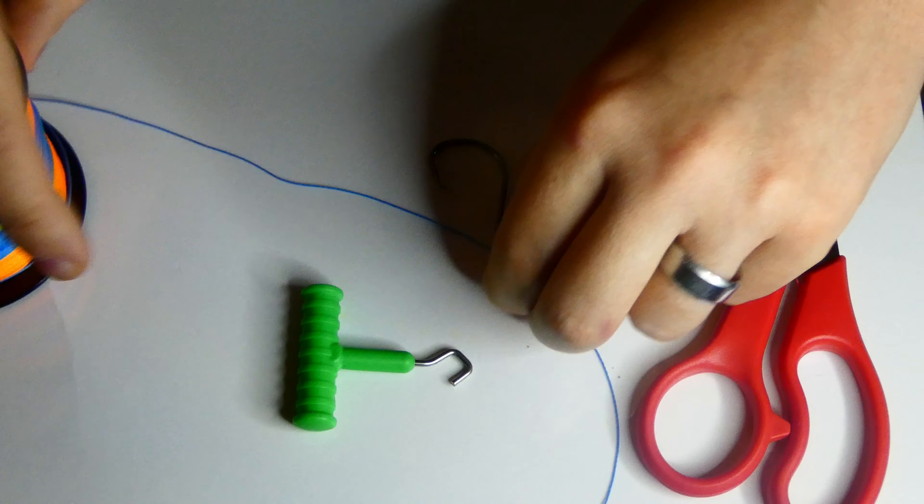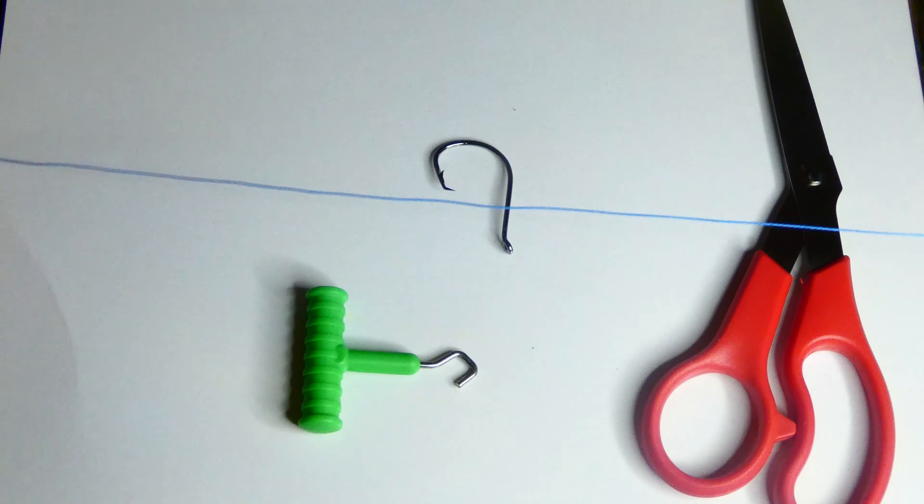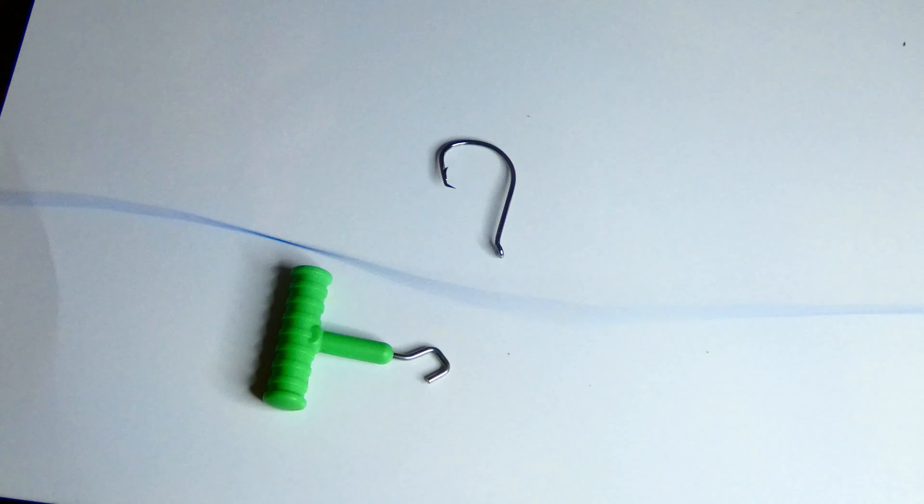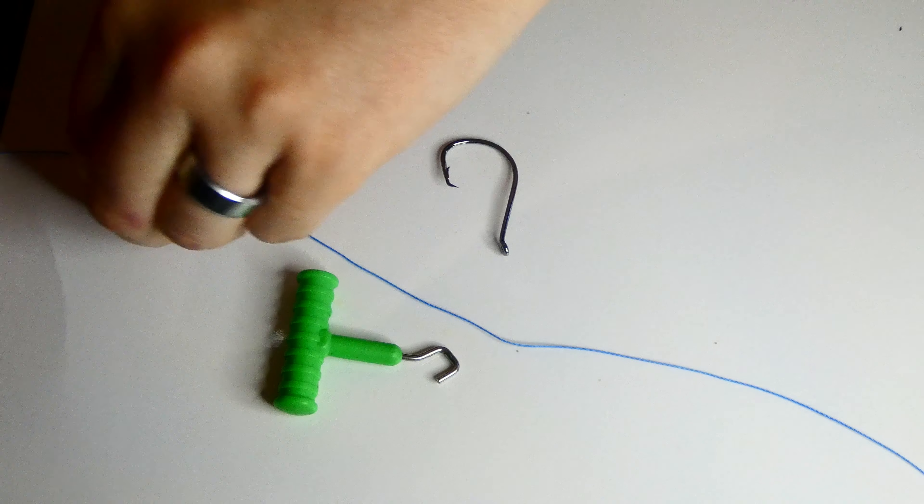So the first thing you want to do is cut a piece of line. You want it to be about 12 inches long, you actually want this to be pretty long.